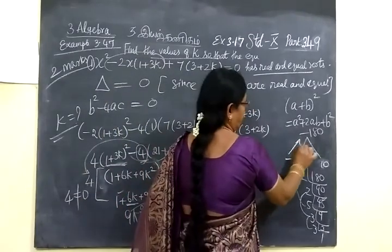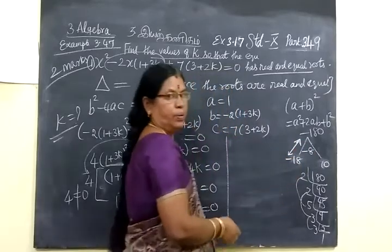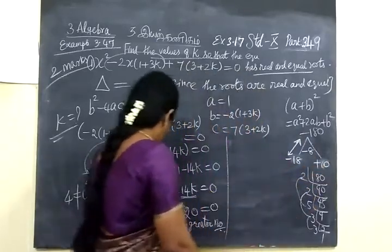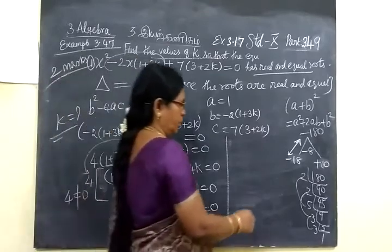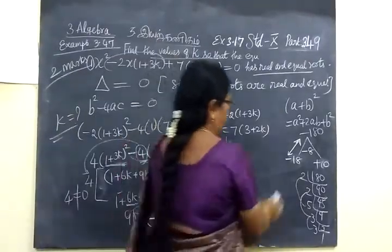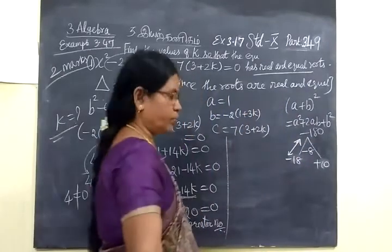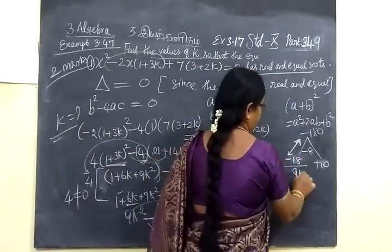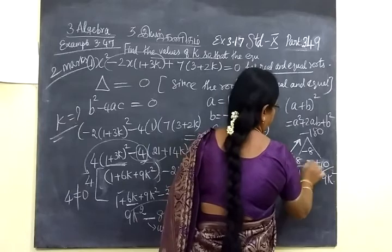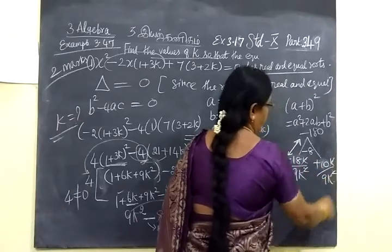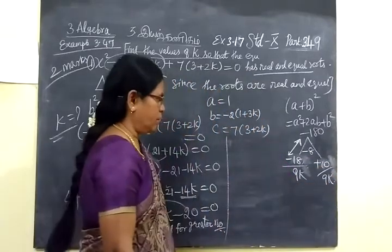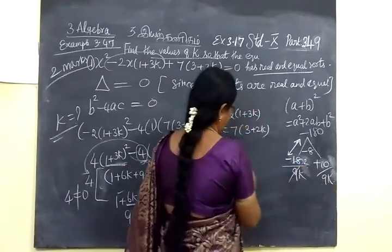So minus into minus plus. Now the denominator: 9K². So you can write 9K, then 9K. You can write 9K. So you just write 9K. Now you cancel. Here 2 times, you can cancel.